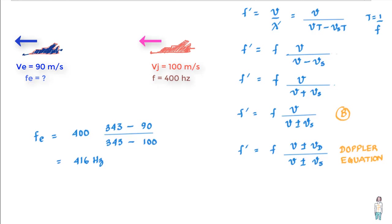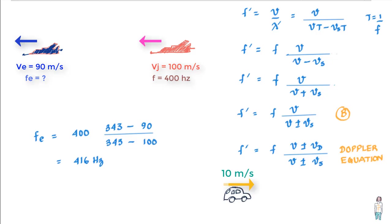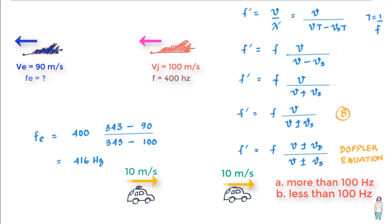Here is a question for you: if you are in a car moving at 10 meters per second and a car behind you is also moving at 10 meters per second and honks at 100 hertz, what frequency do you hear? Will it be more than 100 hertz, less than 100 hertz, or equal to 100 hertz? Try to answer in the comments below and let's have a discussion.